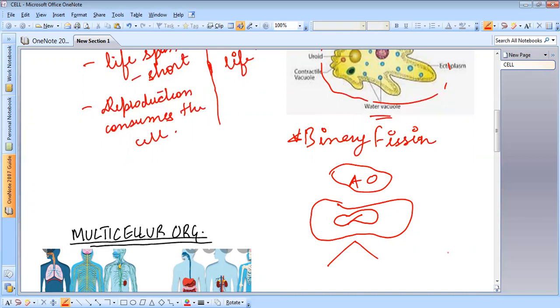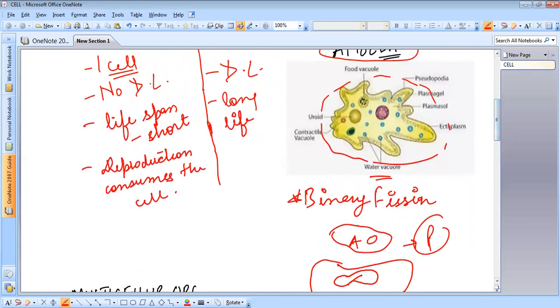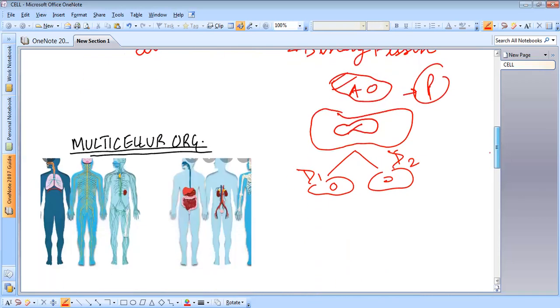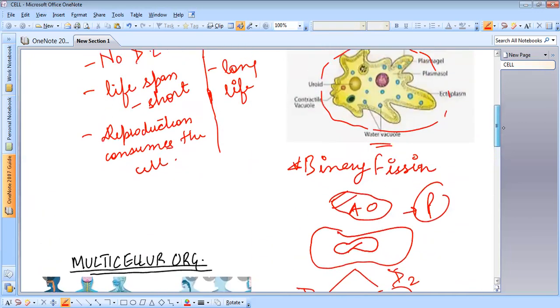This will give rise to two daughter cells. This is daughter cell one, this is daughter cell two, this is the parent cell. So likewise, this parent is no longer alive. It has sacrificed itself for the formation of these two daughter cells.